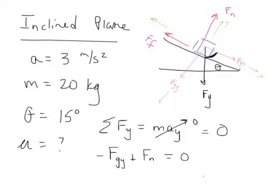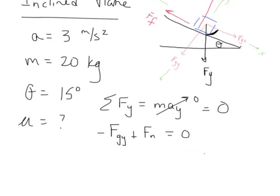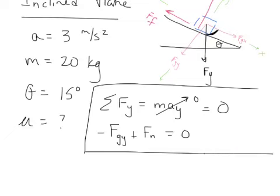Does anybody see mu in this equation? No — and there won't be, because mu is embedded within ff: ff equals mu times fn. So we can't solve for mu here. We'll go to the x direction next. As predicted, fn is going to be our linking variable, just like time was the linking variable in projectile motion. Let's scroll up — that was our y-direction equation. I'll leave a little space because we'll solve for fn shortly.